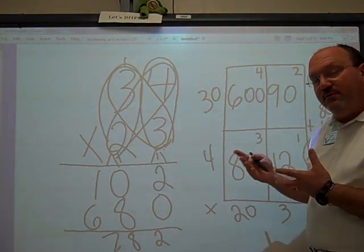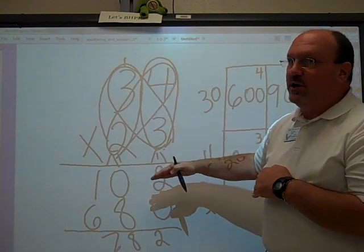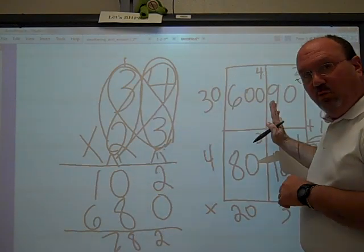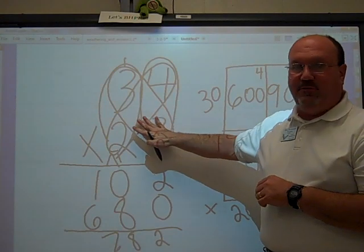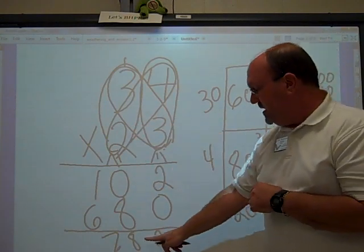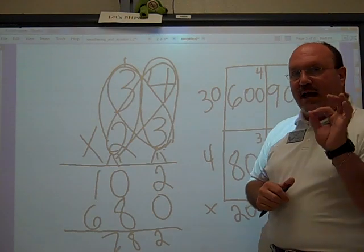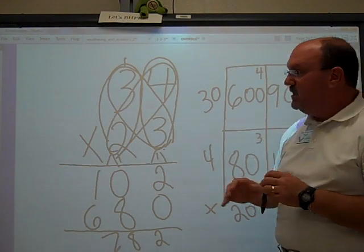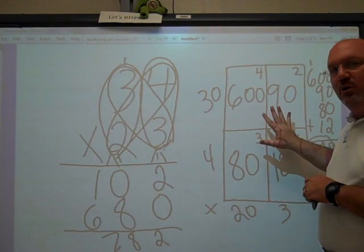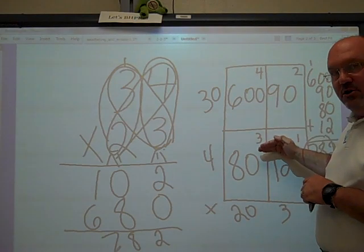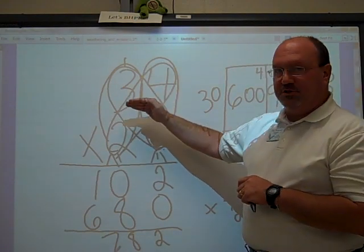You can always do the inverse operation to double-check it. Or you could work it a second time. But if you're working a windowpane and the butterfly method, you'll get a check. And if you get the same product both times, you should be good to go. Practice your procedures for the butterfly method. Because eventually, the windowpane method should go away.